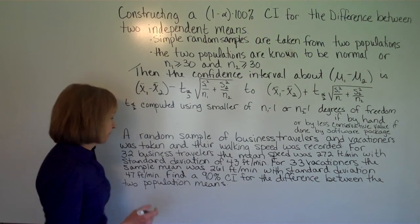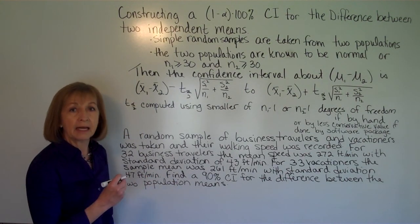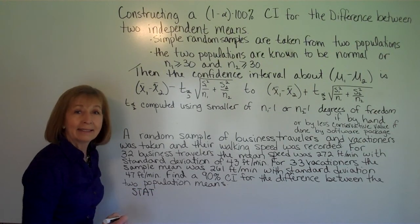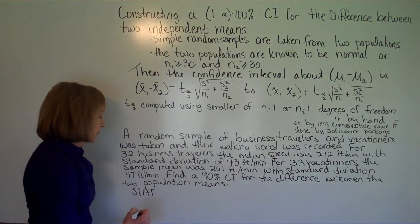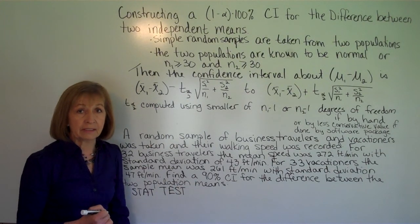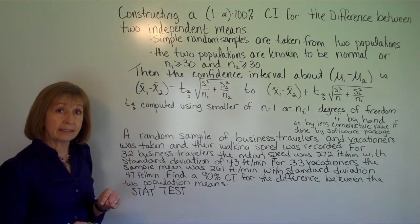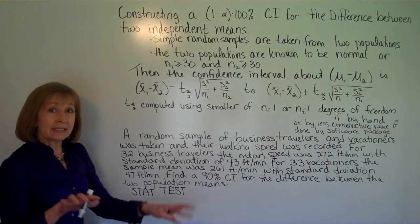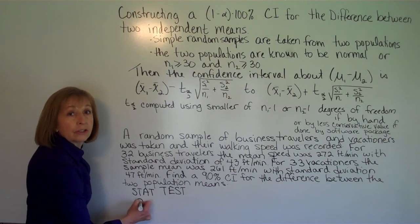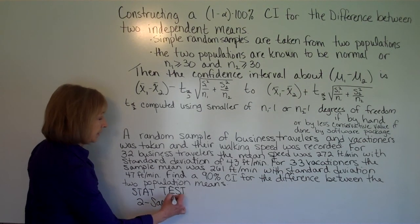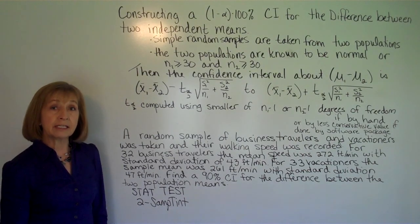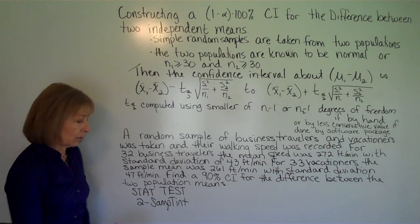Using the TI-83 or TI-84 graphing calculator, press the STAT button, then navigate to TESTS. We want an interval, so move past the test options to the interval options. Since we sampled from two groups, select 2-SampTInt and press Enter. It will first ask for input type: whether you have data or stats.